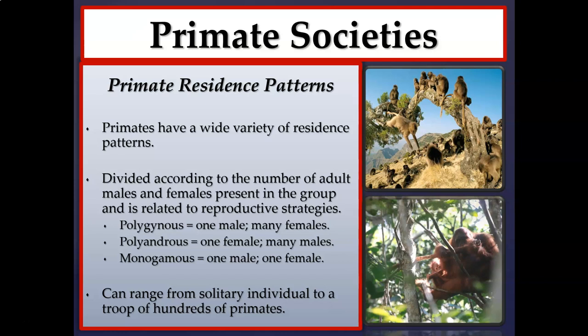Some of the reproductive strategies we will explore: polygynous societies consist of one dominant male and many females — that dominant male mates with all reproductively receptive females. Polyandrous societies consist of one female and multiple males. Monogamous — one male and one female — is one of the most rare forms, seen only in some strepsirrhines, gibbons, siamangs, and some humans. Residence patterns can range from a solitary individual all the way up to troops of hundreds.